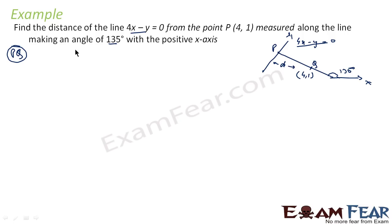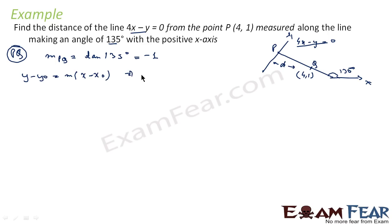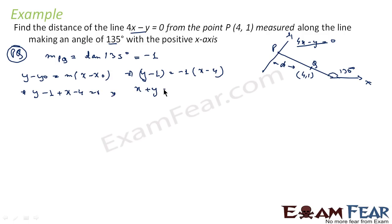First, find the slope of line PQ. M of PQ is nothing but tan of 135 degrees, and that is nothing but minus 1. So we can find the equation of the line. The equation of the line is y minus y-naught is equal to m into x minus x-naught. The equation turns out to be y minus 1 is equal to minus 1 into x minus 4. So we get y minus 1 plus x minus 4 is equal to 0, or x plus y is equal to 5. This is the equation of line PQ.